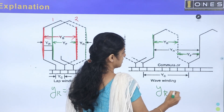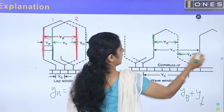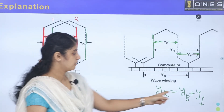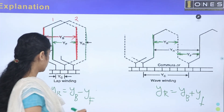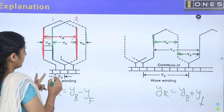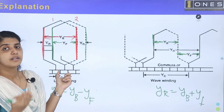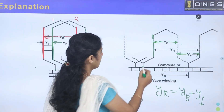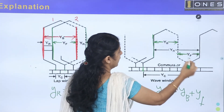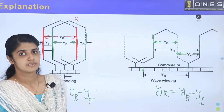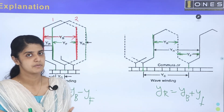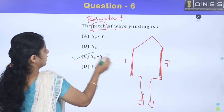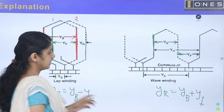The resultant pitch for wave winding is YB plus YF. So if the pitch of wave winding question asks for the answer, it is YB plus YF. The commutator pitch is related to the number of commutator segments.